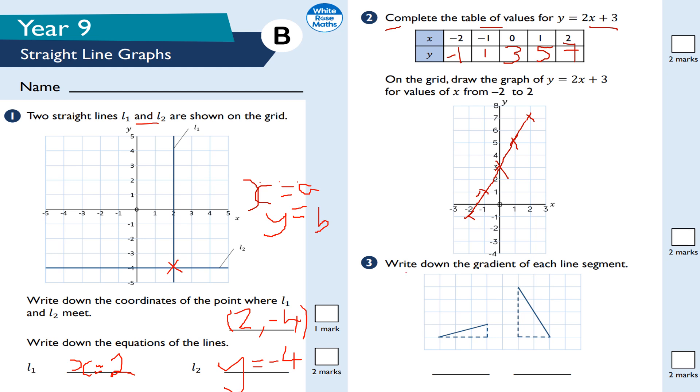Question number three, write down the gradient of each line segment. Now, to work out the gradient, it's rise over run, or the change in y over the change in x. So, how much you go up divided by how much you go across, or go down. So, we go across 3 and up 1, so the gradient will be 1 third. 1 divided by 3. And we'll leave our answer as a fraction for this.